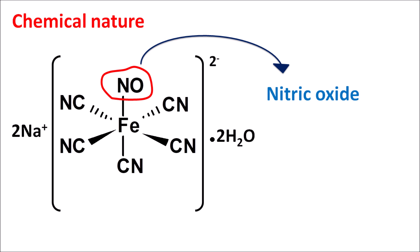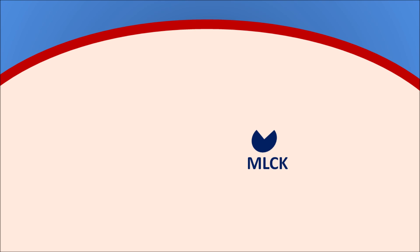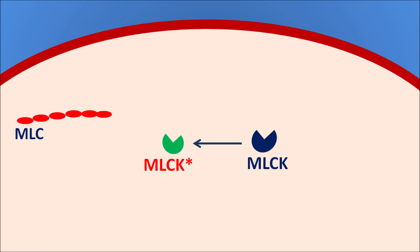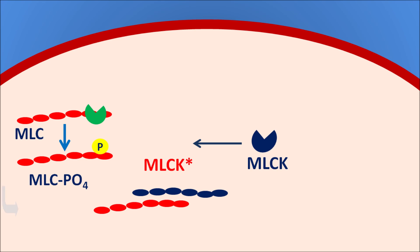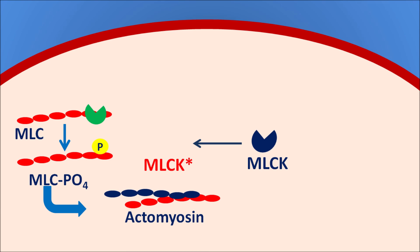Now let us see how this drug acts within the vascular smooth muscle. Myosin light chain kinase (MLCK) plays an important role — these are phosphorylating enzymes that must be activated to their active form. Activated MLCK acts on the myosin light chains, producing their phosphorylation to form myosin light chain phosphate. In this phosphorylated form, MLC can bind with actin to produce the actomyosin complex, resulting in contraction of the vascular smooth muscle.